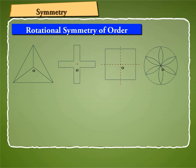Here we are showing some figures which have rotational symmetry of orders other than 2. First figure shows the rotational symmetry of order 3. Second and third show the symmetry of order 4. And the last figure shows the rotational symmetry of order 6.